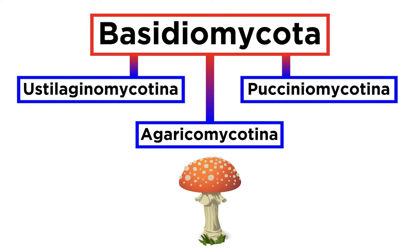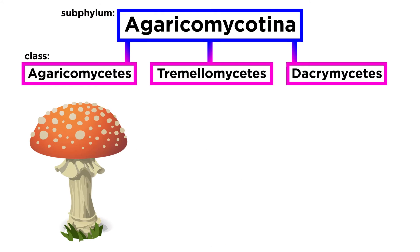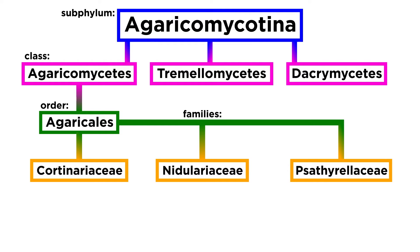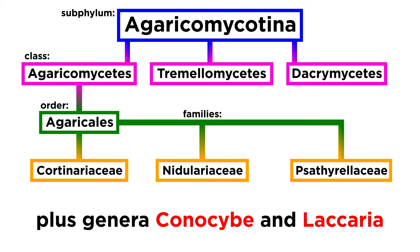For some time we have been discussing fungi within the phylum Basidiomycota, the club fungi. Within this phylum, let us now move further into the class Agaricomycetes, which consists of many of the mushroom-forming species of fungi, and more specifically the order Agaricales, which consists of many of the gilled mushroom species. In this tutorial we will be introducing a number of new types of these fungi, including the families Cortinariaceae, Nidulariaceae, and Psathyrellaceae, along with the genera Conocybe and Laccaria.